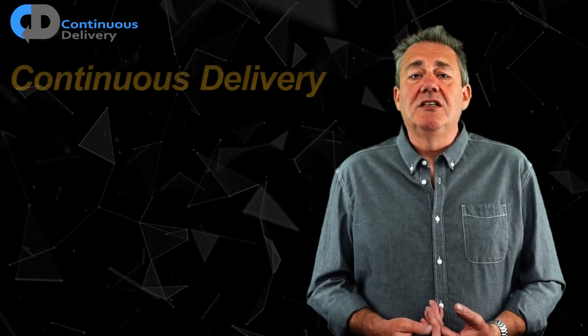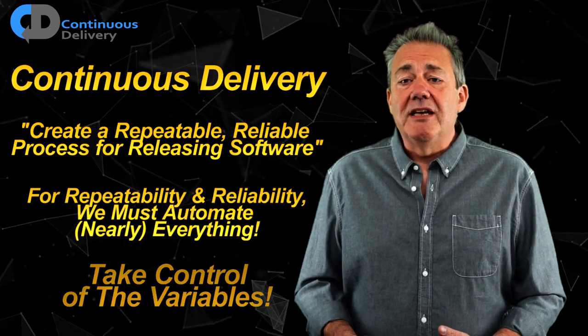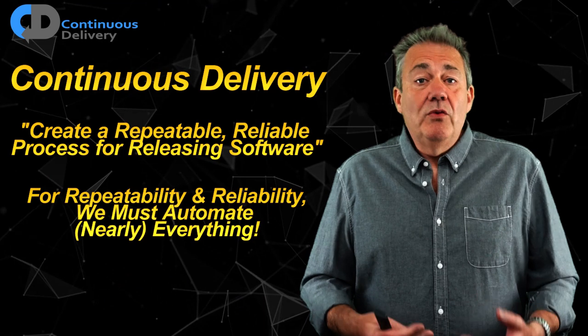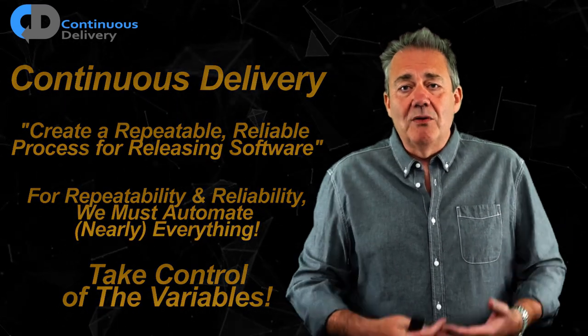The first principle of continuous delivery says we're trying to create a repeatable, reliable process for releasing software, and for that we must automate to get the repeatability. In order to automate we must take control of the variables — each time we carry out that automated process we want to achieve the same result every time. Starting down this road enables repeatability and reliability, but it also allows us to version control the infrastructure. That means if we make a change that's wrong in some way, we can step back to a stable known version. It also opens up the opportunity to test those things and evaluate whether a change is going to do what we hope.